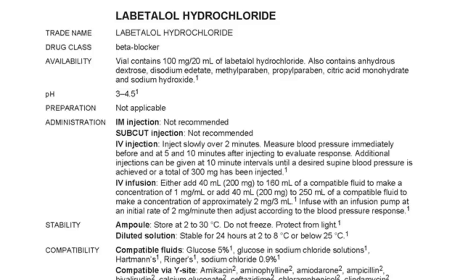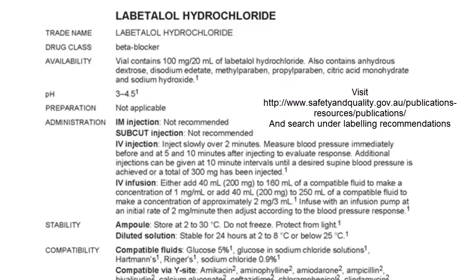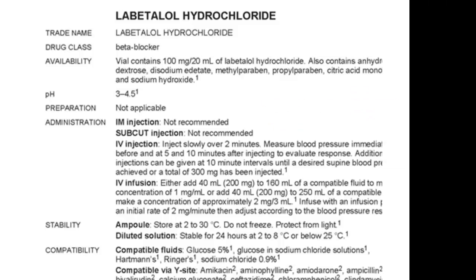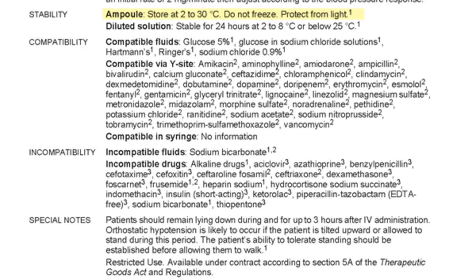Some medicines are very unstable and should be used immediately. Some hospital policies require only freshly made injections, discarded if not used immediately. If you can store diluted medicines, make sure they are labelled correctly — refer to the Australian Commission on Safety and Quality in Health Care's publication, 'National Recommendations for User-Applied Labelling of Injectable Medicines, Fluids and Lines.' In the back of the book, anti-neoplastic medicines may have stability beyond 24 hours as they are prepared in a sterile room. For labetalol hydrochloride, store the vial at 2–30°C; once diluted, keep up to 24 hours at 2–8°C.